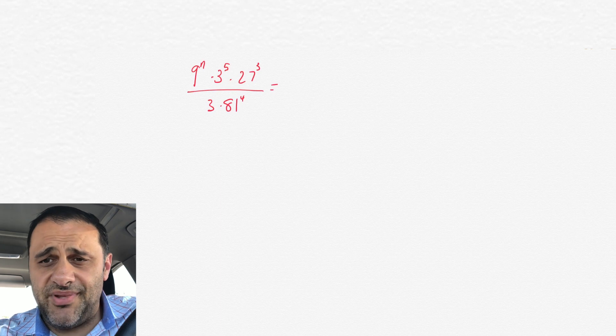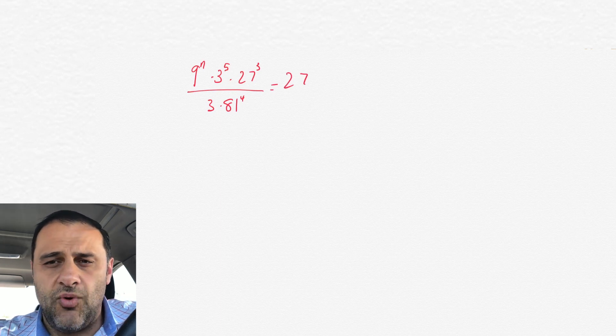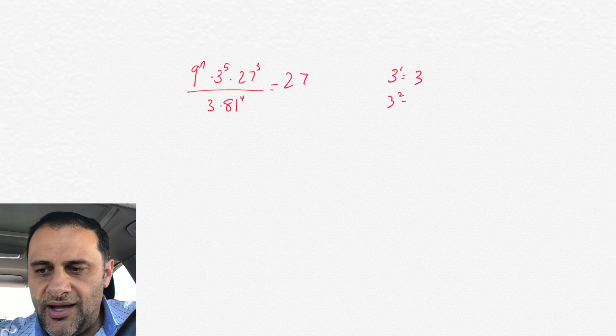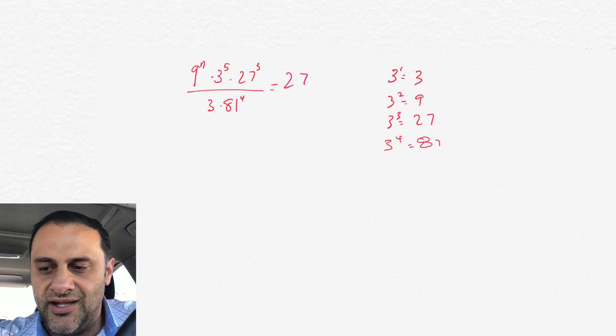All right, the first order of business, as you can see, we got a 3, we got 9, we got 27, 81. The base is the same. It's 3, and really here is a good reference that you should know. 3 to the 1 equals 3, 3 to the 2 or 3 squared equals 9, 3 cubed or 3 to the 3 equals 27, and 3 to the 4th power equals 81.